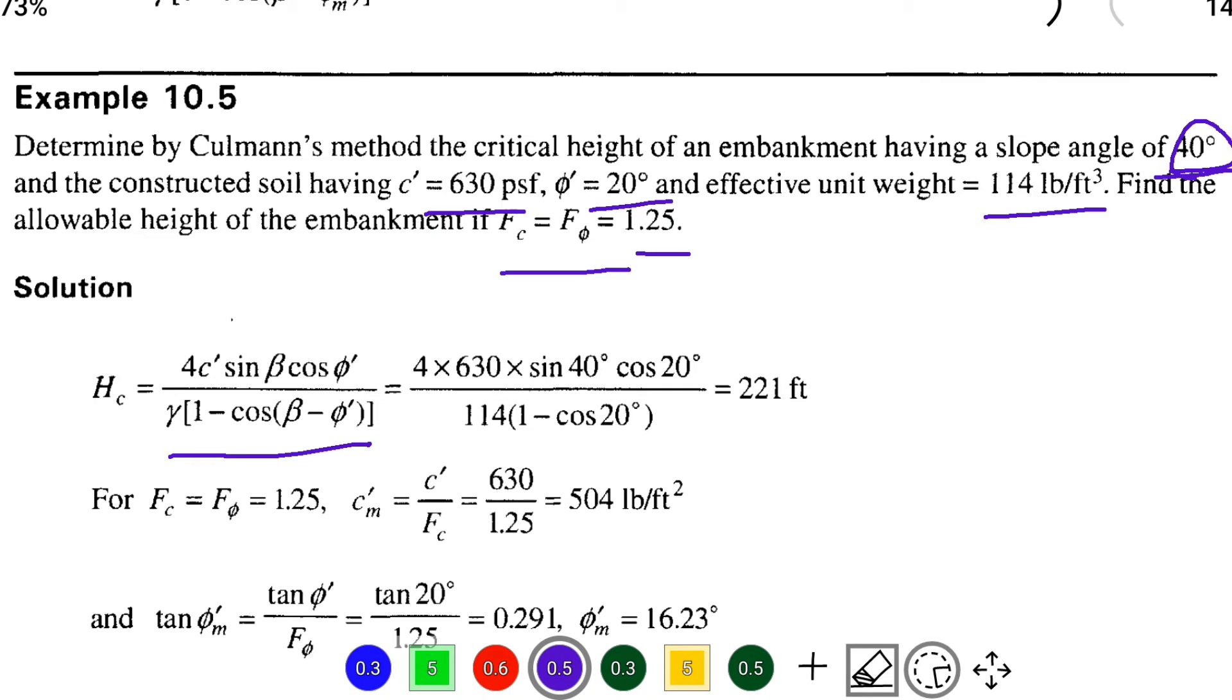Divided by gamma value 114 times 1 minus (beta minus φ), so beta is 40 degrees minus φ is 20 degrees equals 20 degrees. Solving this we get the value of 221 feet.